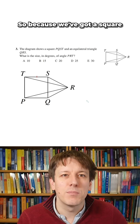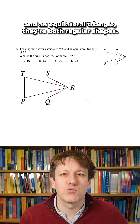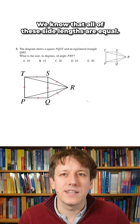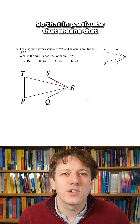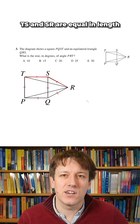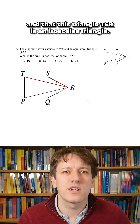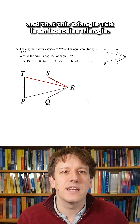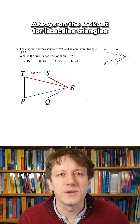Because we've got a square and an equilateral triangle, they're both regular shapes, so we know that all of these side lengths are equal. In particular, that means that TS and SR are equal in length, and that triangle TSR is an isosceles triangle.